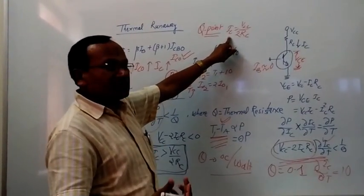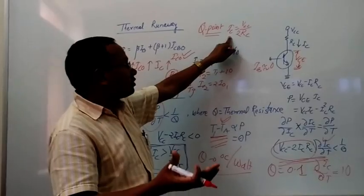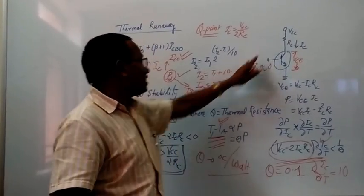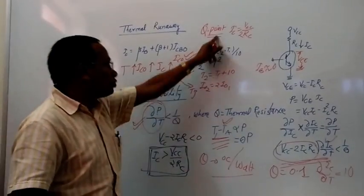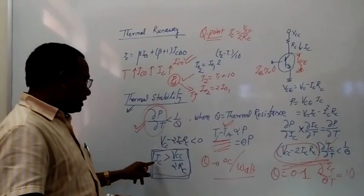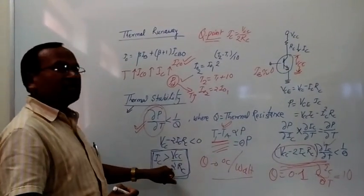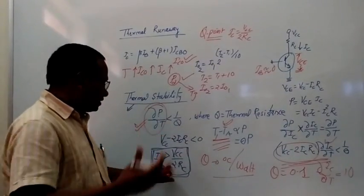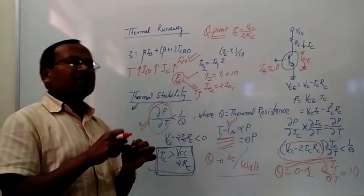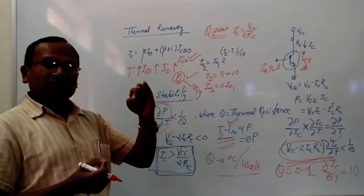The load line theory gives a generalized condition for proper and satisfactory operation of the BJT, where the Q-point is at the middle of the load line. But at the same time, to avoid thermal runaway, we need to combine both conditions. The conclusion is: to avoid thermal runaway, the Q-point should be slightly above the middle of the load line — slightly higher than VCC/(2·RC), but not much higher.